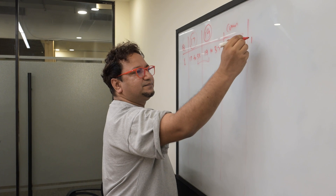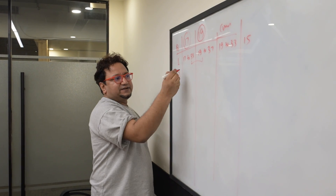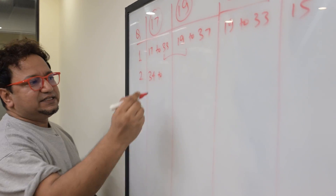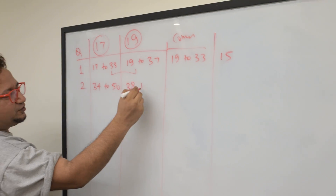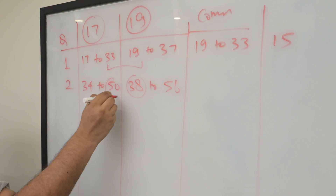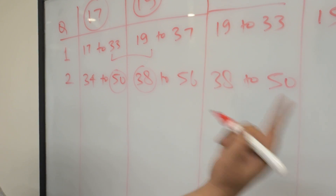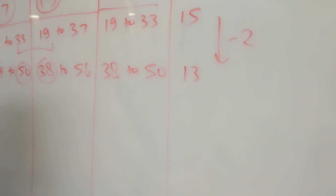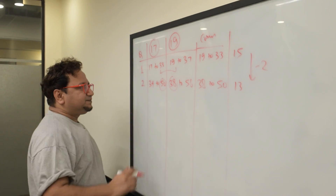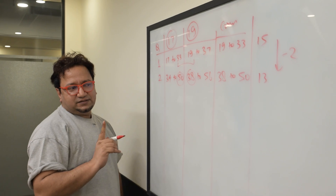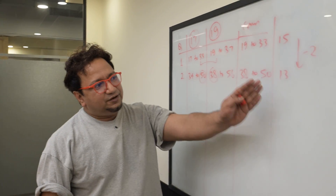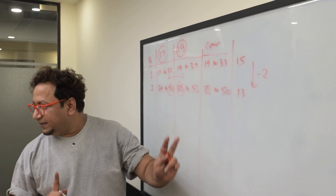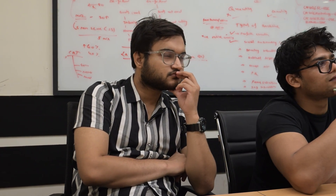If the quotient is 2: for 17 it is 34 to 50; for 19 it is 38 to 56. So 38 to 50 is our sweet spot — 50 − 38 + 1 = 13 elements. For quotient 3: for 17 it is 51 to 67; for 19 it is 57 to 71. So 57 to 67 gives 11 elements. We can see an arithmetic progression being formed: 15, 13, 11...